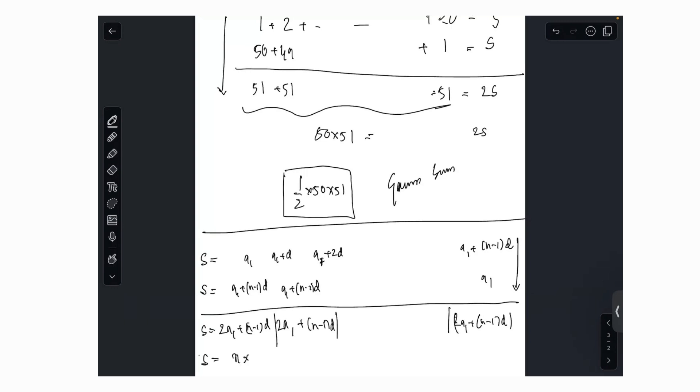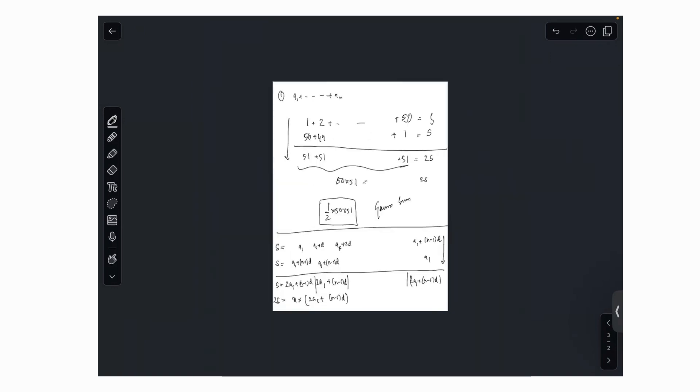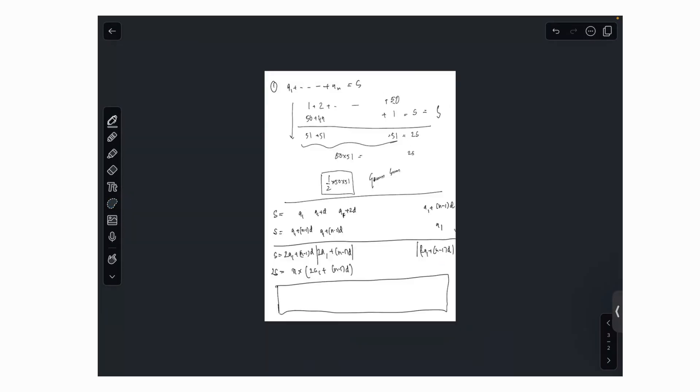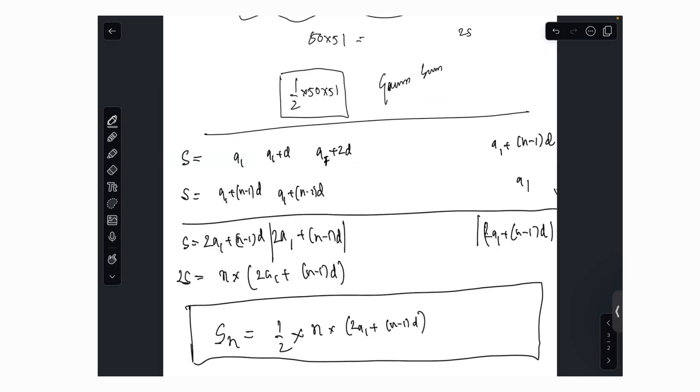So 2s is equal to n into 2a1 plus n minus 1d. So this is beautiful because you now understood, the sum, this is called Sn, that T1 plus T2 dot Tn is called Sn. So Sn is nothing but half into n into this. If you observe, this is nothing but essentially you're adding the first term to the last term. So you can write it as half into n times T1 plus Tn. Take the average of the last and the first term and then you multiply it n times.